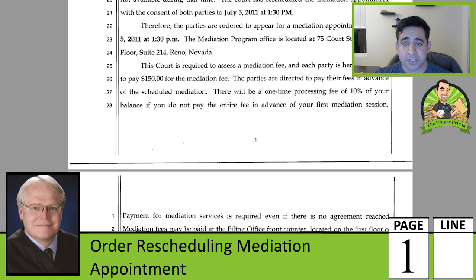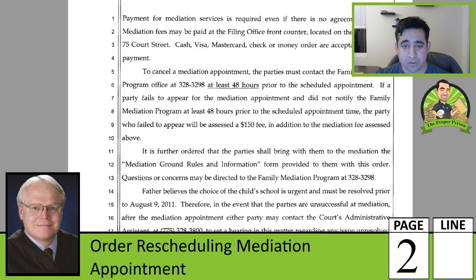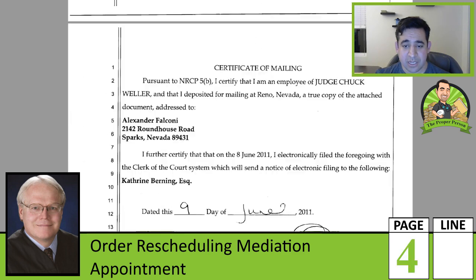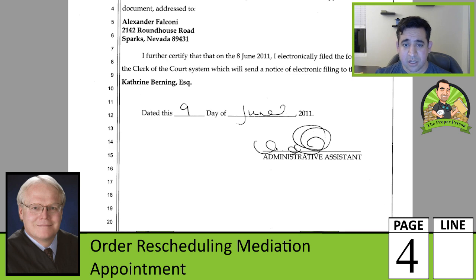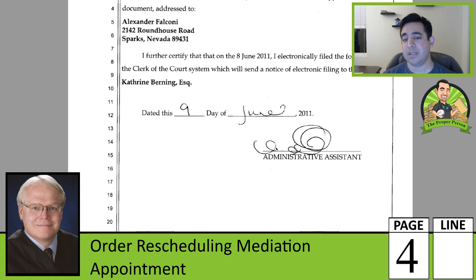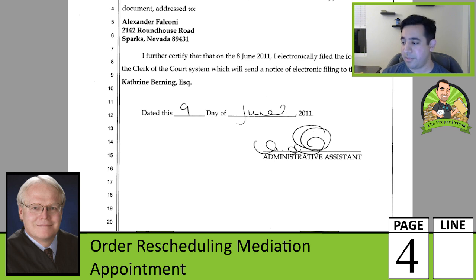The court reschedules mediation for July 5th, reiterates the assessment fee, what happens if you don't show, and the cancellation process. My ex's attorney does not oppose the application for the bond to be refunded to me, and eventually it is refunded. We'll get to see that when the actual order comes down. That $500 bond posted with my $250 filing fee — total $750 — with $500 out of the $750 getting refunded to me. We'll probably see that in the next video or the one after.